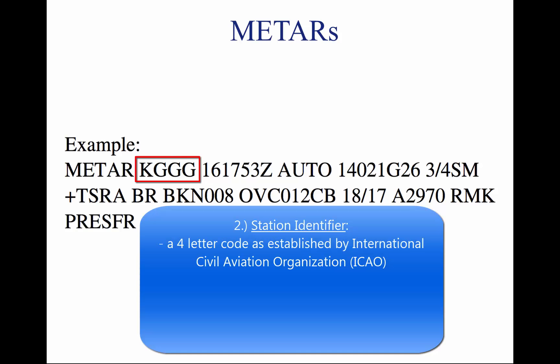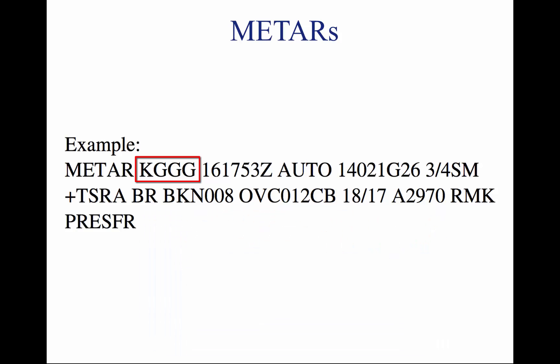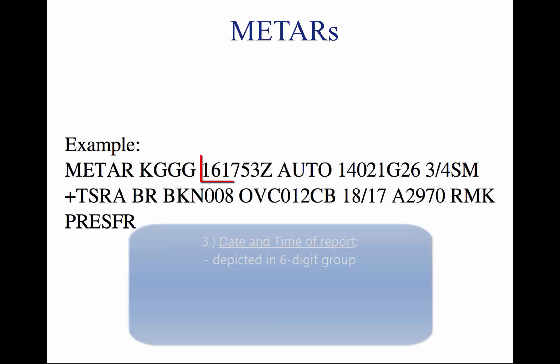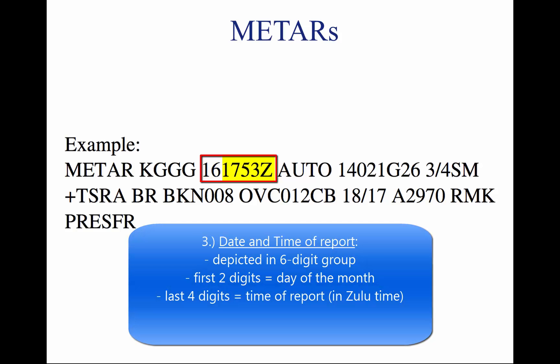Two, station identifier — KGGG. A four-letter code as established by the International Civil Aviation Organization (ICAO). KGGG is the identifier for Gregg County Airport in Longview, Texas, with K being the country designation and GGG being the airport identifier. Alaska identifiers always begin with the letters PA, and Hawaii identifiers always begin with the letters PH. Three, date and time of report — 161753Z, depicted in a six-digit group. The first two numbers stand for the day of the month; the last four stand for time converted to Zulu time, denoted by the letter Z.